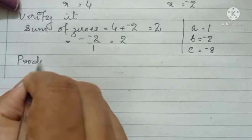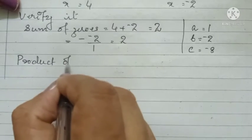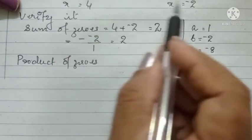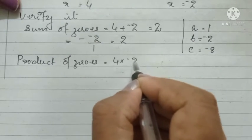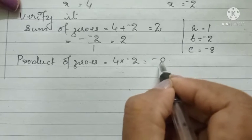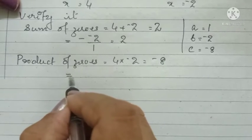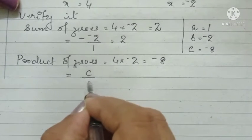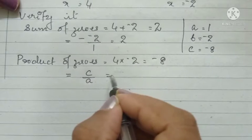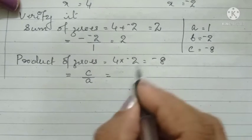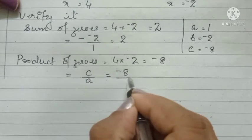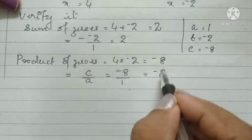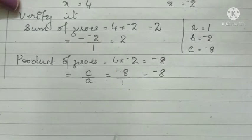Now for the product of zeros: 4 into (minus 2) = minus 8. We verify using the formula: product = C by A. The constant C is minus 8 and A is 1, so C by A = minus 8 by 1 = minus 8. Both answers are correct, therefore the relationship is verified.